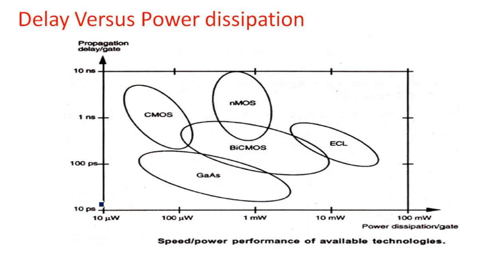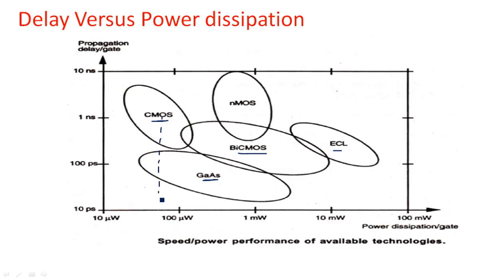Looking at the delay versus power dissipation graph: on the x-axis is speed and power performance, and on the y-axis is propagation delay. CMOS technology has a somewhat higher delay compared to BiCMOS and ECL, and Gallium Arsenide has low propagation delay and moderate power dissipation. However, CMOS technology has the very lowest power dissipation among all these technologies — that is its main advantage even though it is slower.